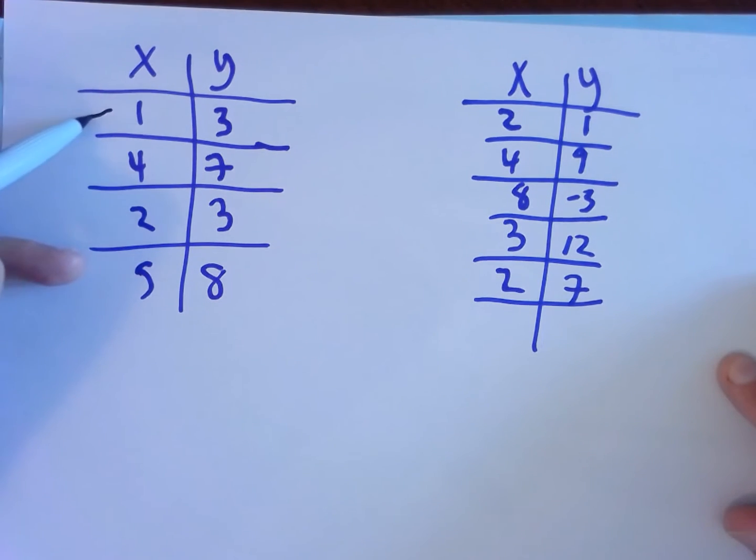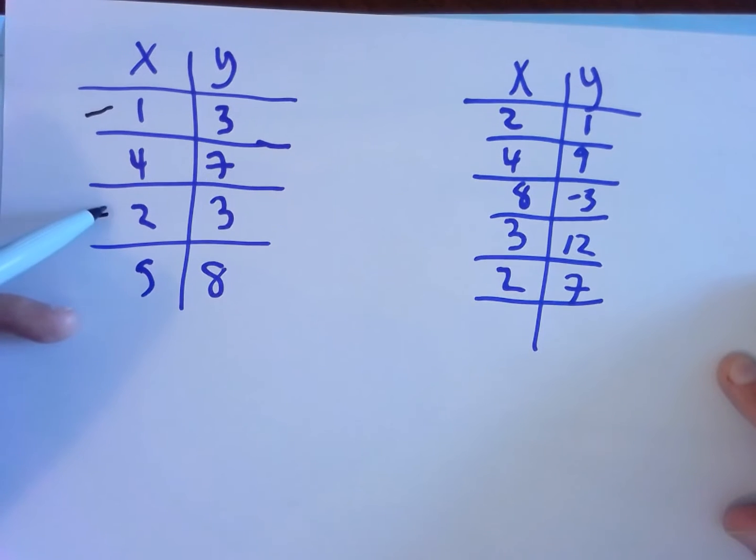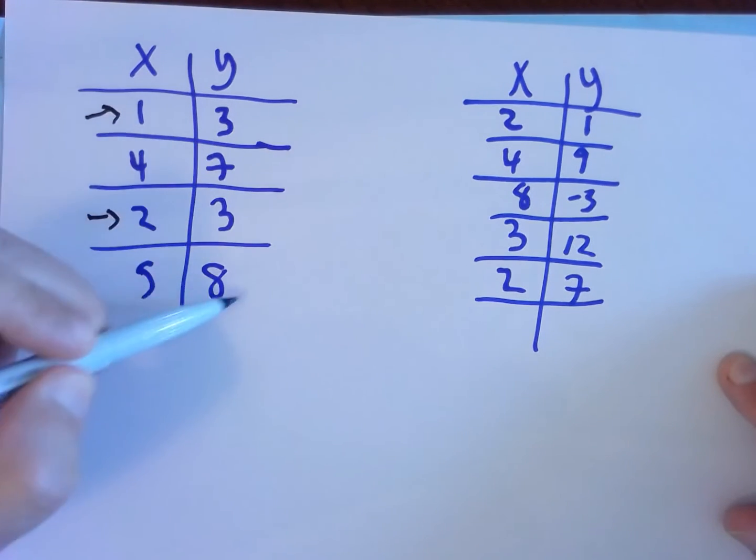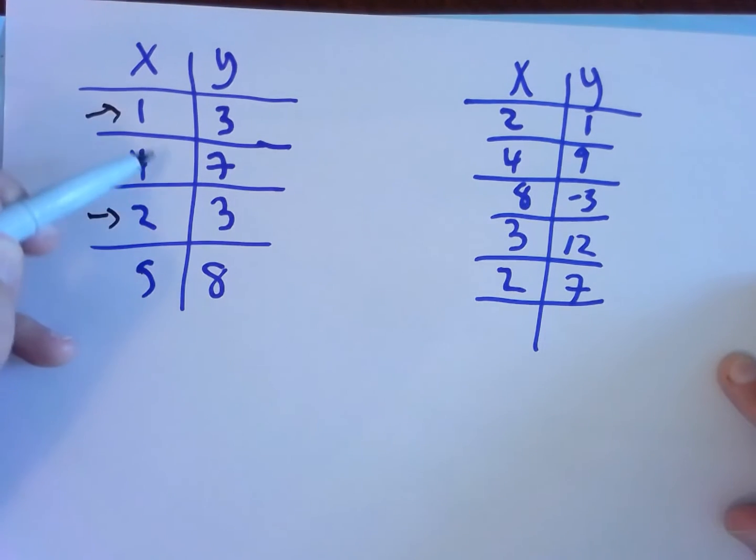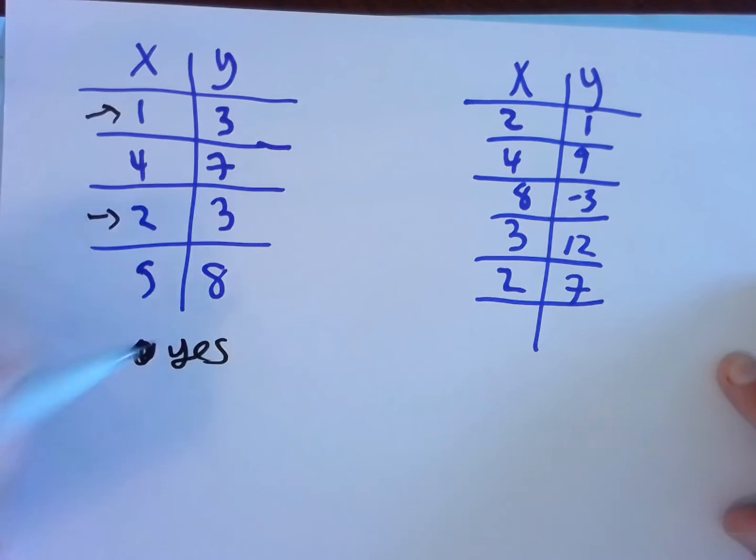Now, two different x's, 1 and 2, both have the same output, but we don't care what's happening over here. We only care are there any repeated x's with different y's. No problems here. This relation is a function.